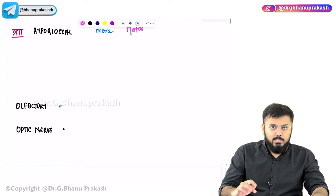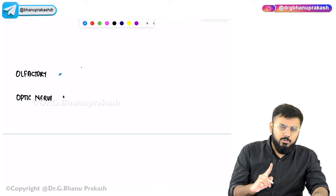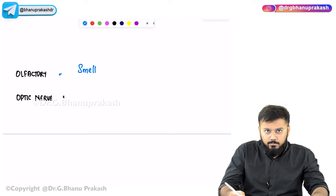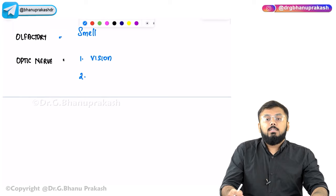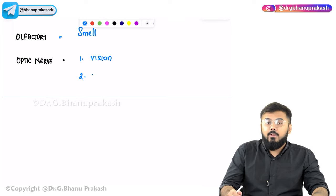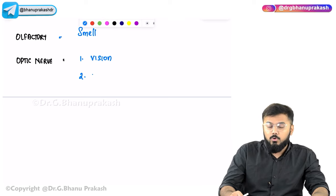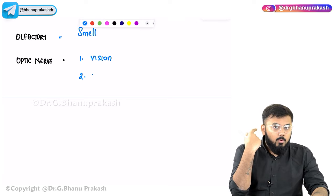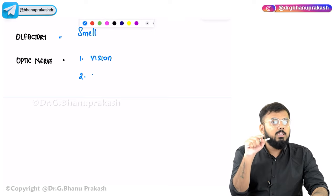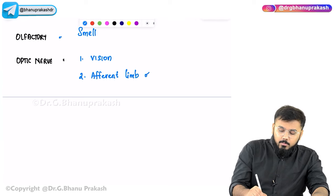Discussing functions one by one: the olfactory nerve (CN I) has only one function — smell. The optic nerve (CN II) has two functions: vision, and the afferent limb of the pupillary light reflex (carrying information from the retina back to the cortex when light falls on it).